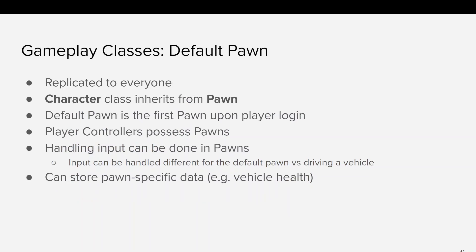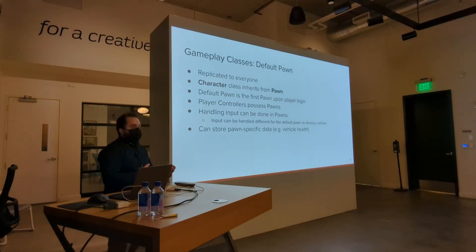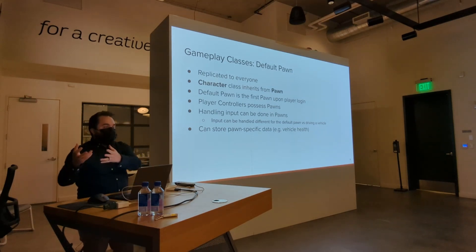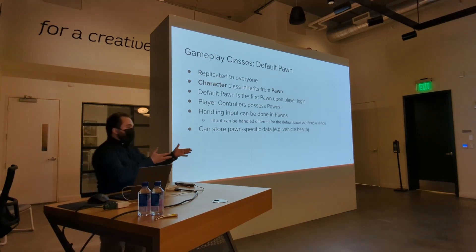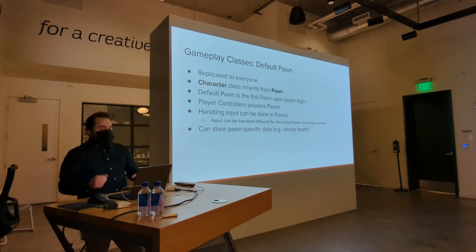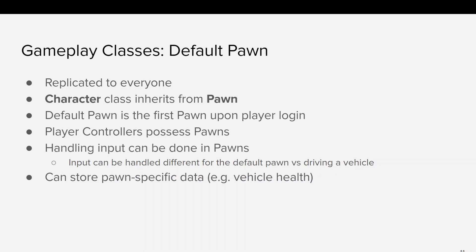The default pawn class — you may be familiar with the character class, but character is just a child class of pawn. The pawn is replicated to everyone. It's the physical bipedal character walking around in the world, and player controllers possess the pawn. You can think of the controller as the input that drives the thing running around. You can possess different pawns — walking as a person, then hopping in a car. Input can be handled in the player controller or in the pawn itself.